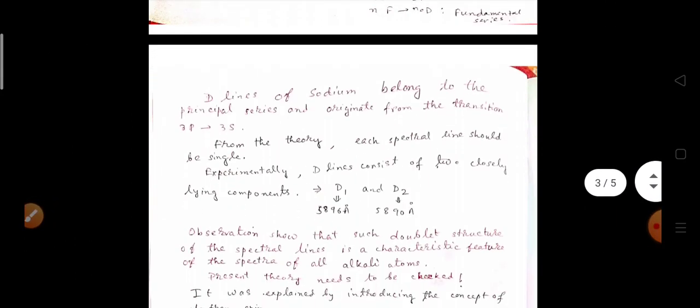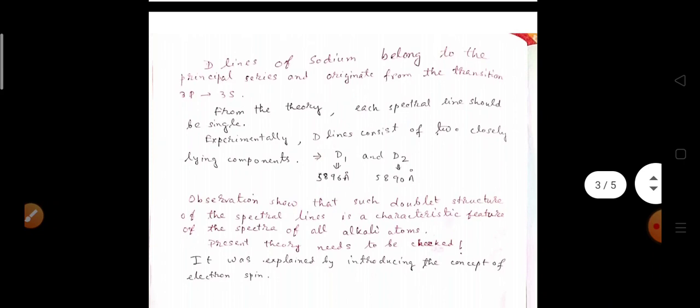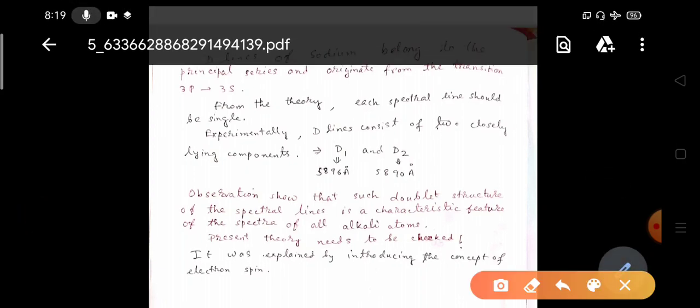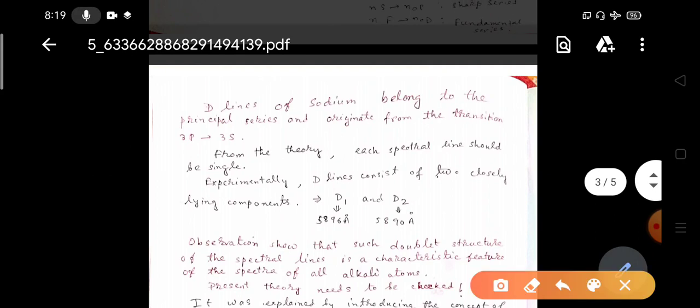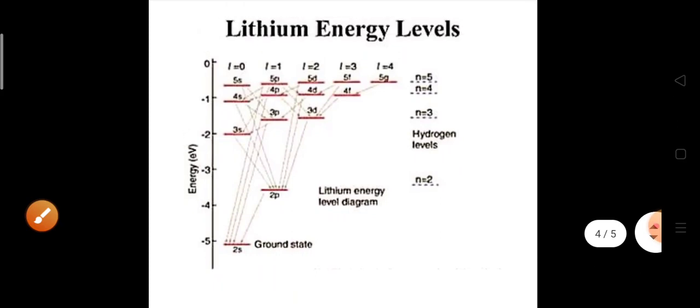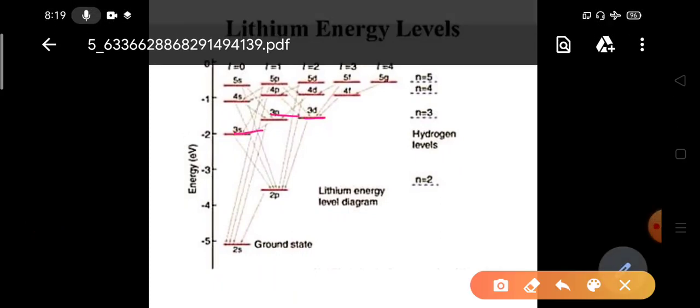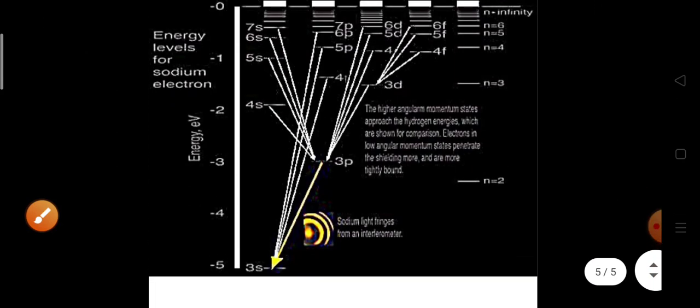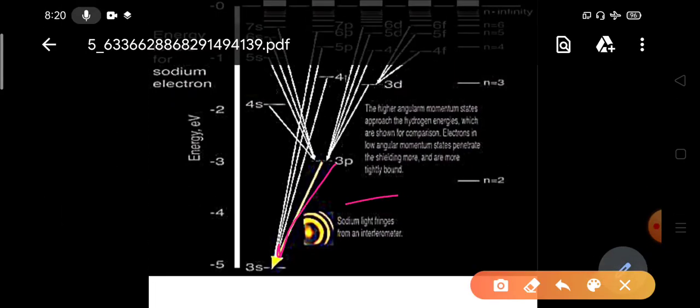Now what we will understand is the problem with understanding the spectral lines of the alkali atoms with the present theory of Sommerfeld-Bohr model. Because the D lines of the sodium belong to the two lines, according to our Bohr-Sommerfeld rule, each lines are only having only one energy levels. From 3P to 3S transition, we should get only one line. The spectrum, we should get the spectral line, it should consist of only a single line.